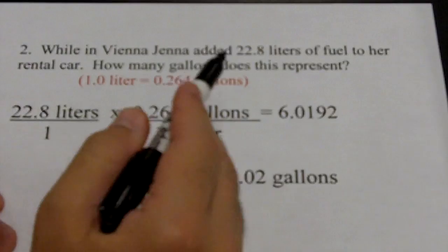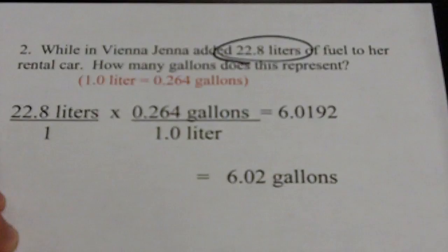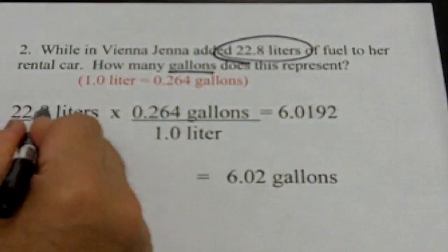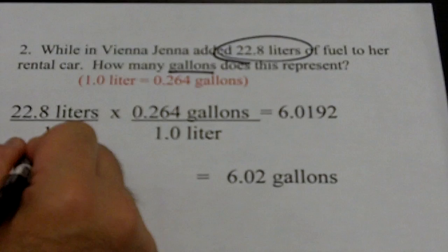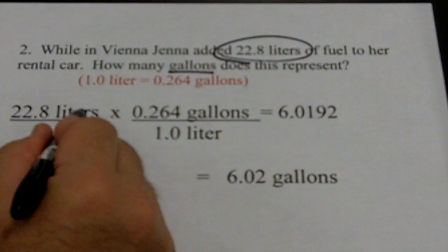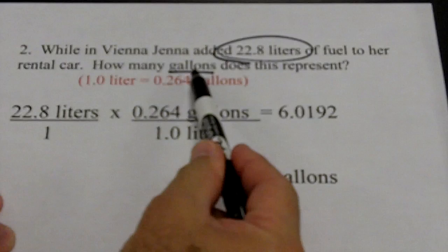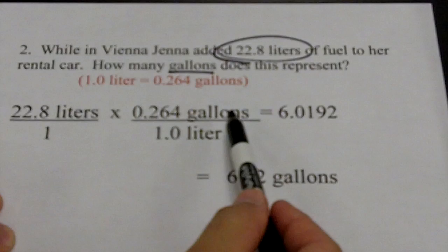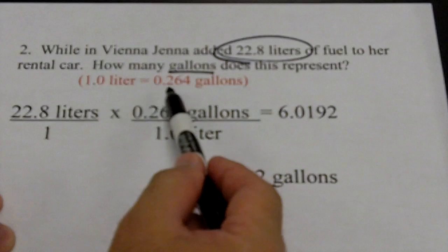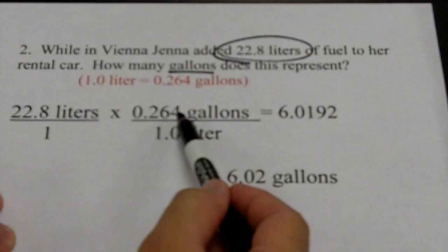Remember the procedure: look for numbers in the problem and circle them — 22.8 liters — then look to see what I'm being asked for: how many gallons? Underline that. Let the pen lead the brain. Write 22.8 liters over 1 every time. Times — whatever unit is there goes there, not the number, just the unit. So liters goes in the denominator and gallons goes in the upper right. I have the conversion: 1.0 liter equals 0.264 gallons.